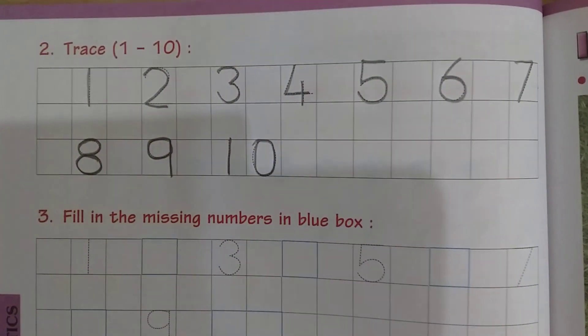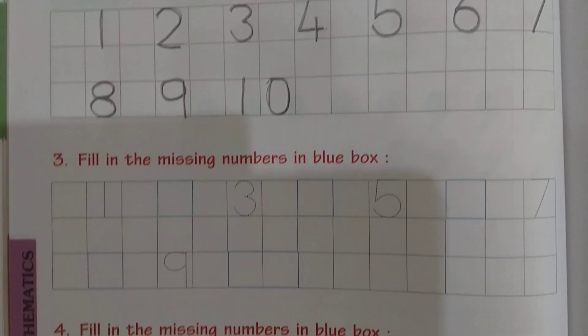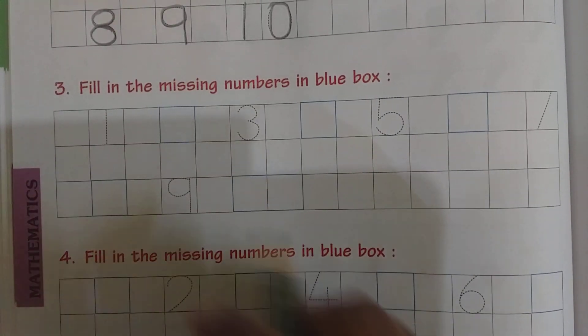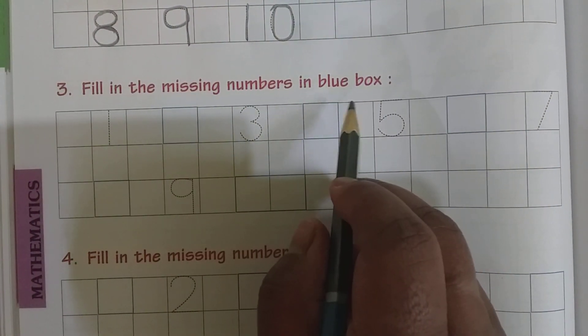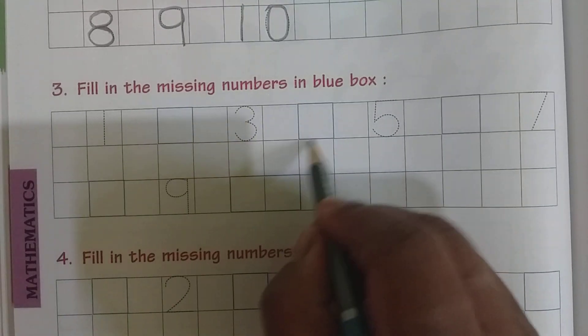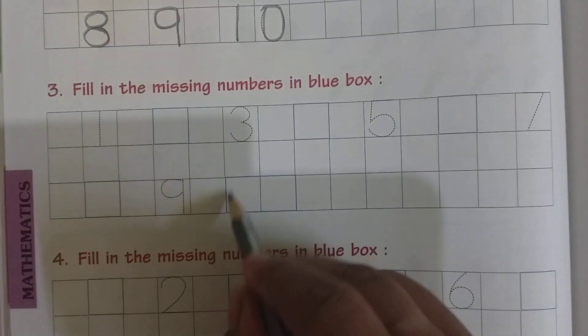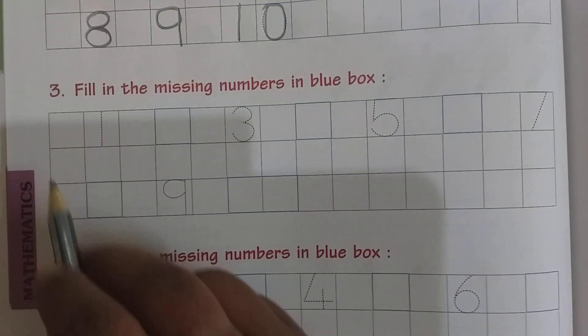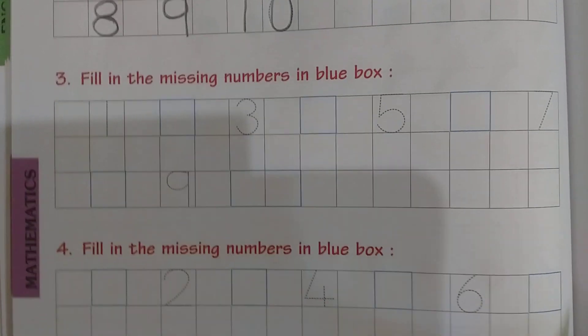See children, like this you also should trace and write from 1 to 10. Now fill in the missing numbers in blue box. See here they have given blue boxes. After 1, one box they have given some blue boxes. Now here what we should do? We should write which is the missing number.